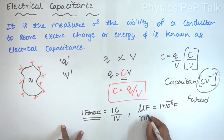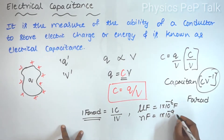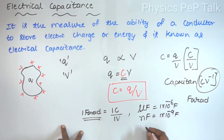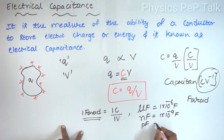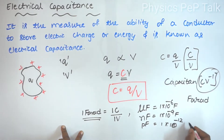Next is nanofarad, which is 1 into 10 to the power minus 9 farad. Next is picofarad, which is 1 into 10 to the power minus 12 farad.